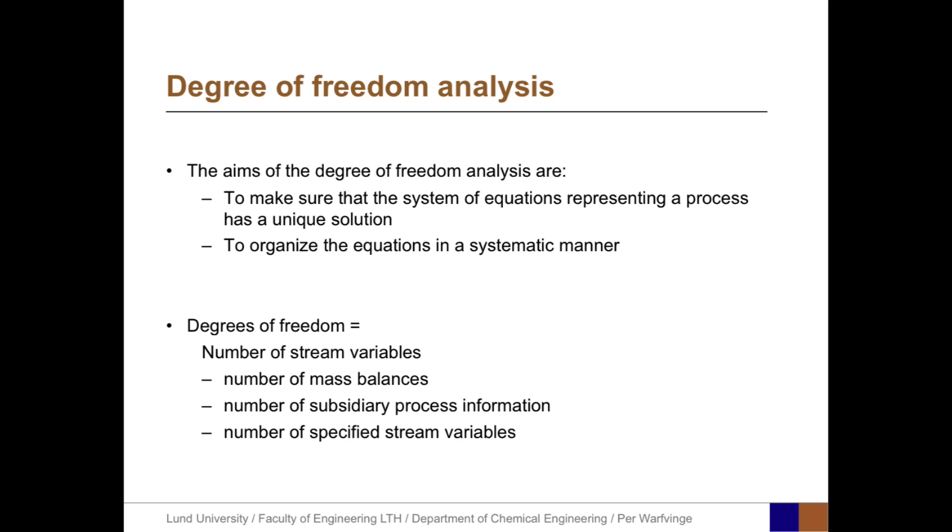We can calculate the degrees of freedom as the number of stream variables minus the number of mass balances minus the number of subsidiary process information minus the number of specified stream variables, that is, the stream variables that we already know the value of. You can look at this as the number of stream variables represent the number of unknowns, while the other three parts represent the number of equations.